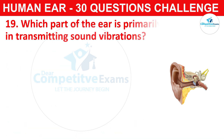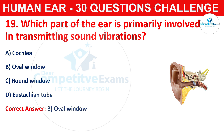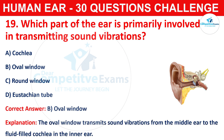Question number nineteen: which part of the ear is primarily involved in transmitting sound vibrations? Your options are cochlea, oval window, round window, or Eustachian tube. The correct answer is B, that is oval window. The oval window transmits sound vibrations from the middle ear to the fluid-filled cochlea in the inner ear.